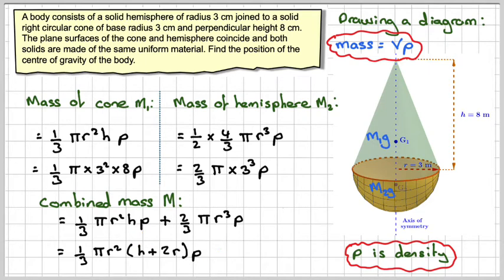Now the distance of the center of gravity of a cone from its base, and these are normally given in an exam, is h over four, which is going to be eight over four in this case, which is two, because the height is eight. And for the center of gravity from its base here for a hemisphere is three r over eight. So that'll be three times three over eight, which is nine over eight. We will need to know that in order to be able to take the moment.